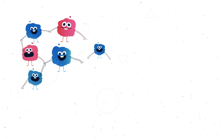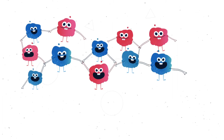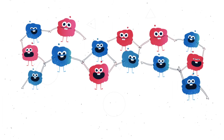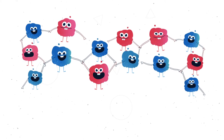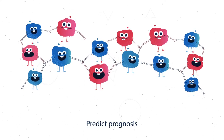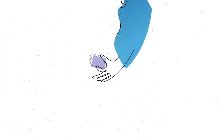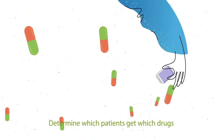Researchers working on the Cancer Cell Map Initiative are mapping these communication networks between proteins in cancer cells. What they learn will help them: 1. Predict prognosis, and 2. Determine which patients get which drugs.